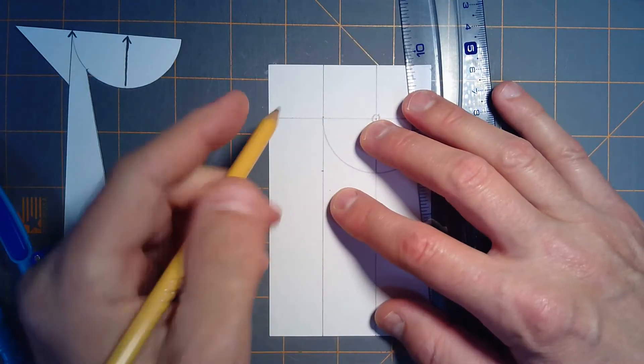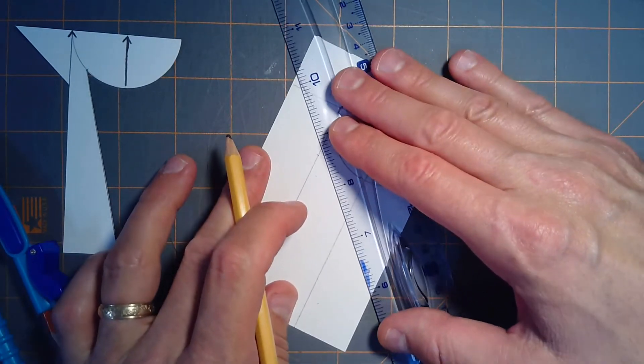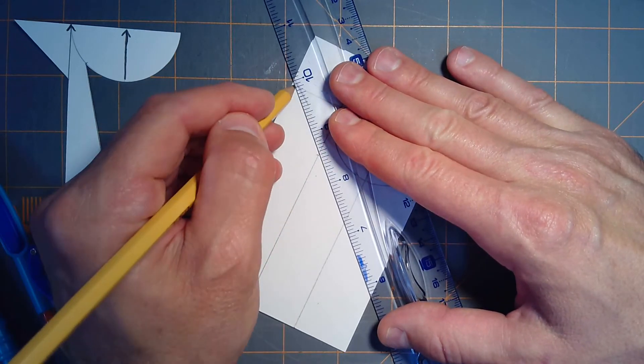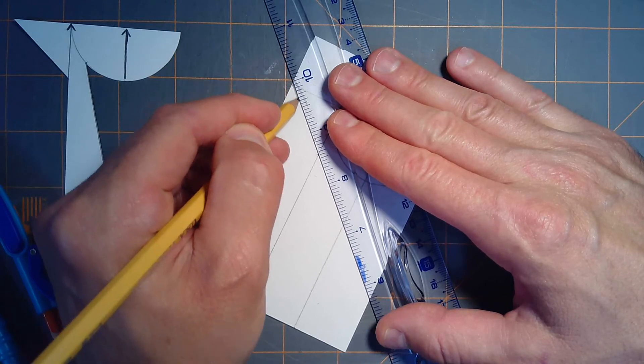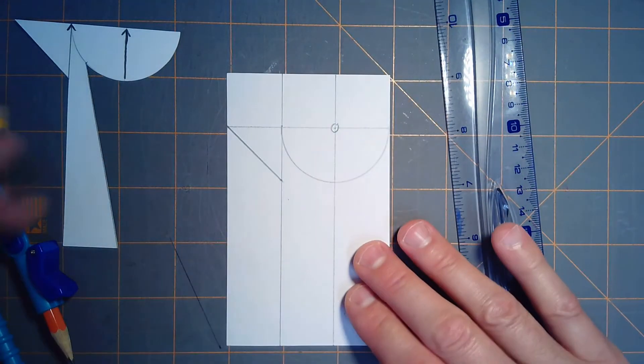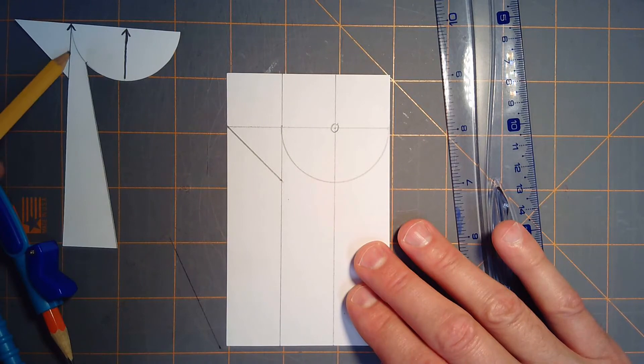And then from that reference mark, I'm going to connect to this point right here on the edge of the card. All right, so that forms the point of the tomahawk.